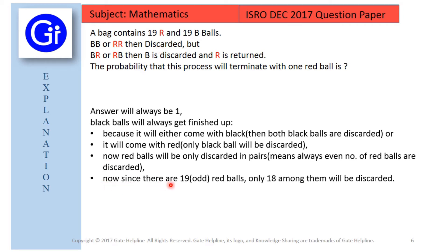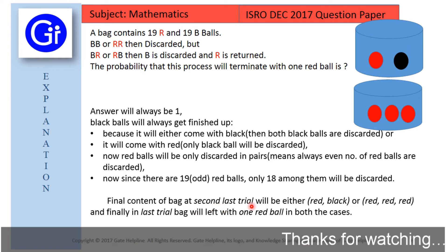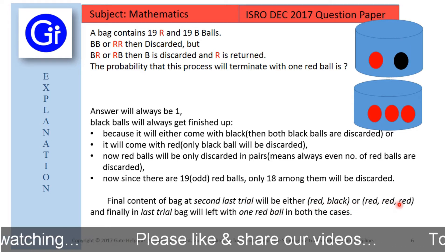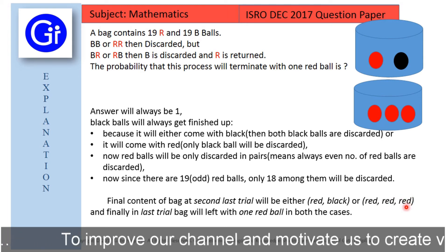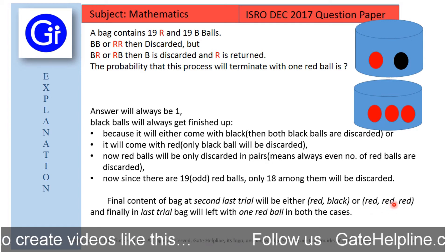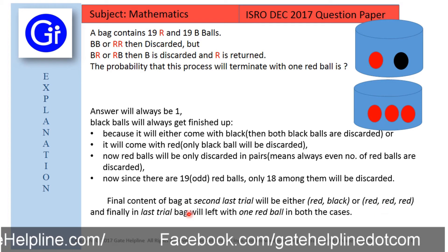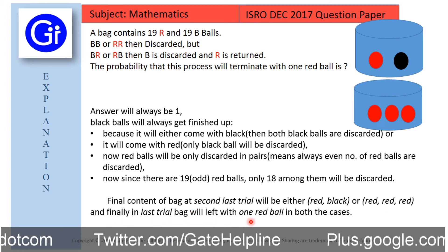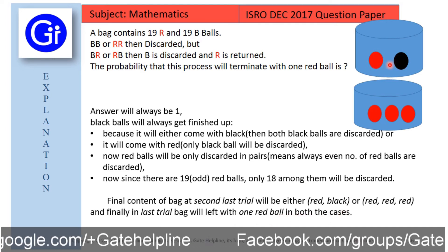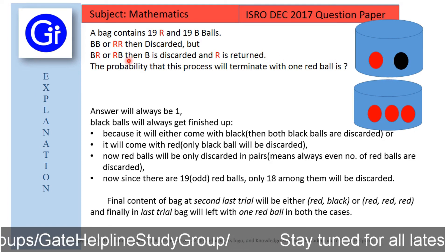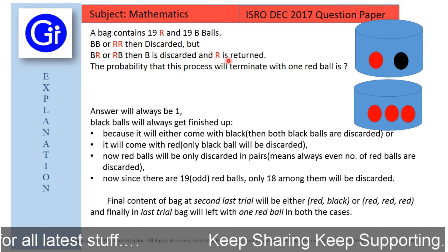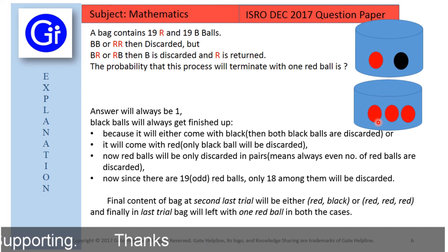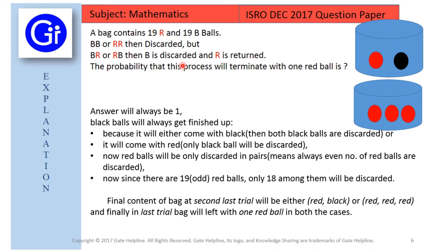Since there are 19 red balls, only 18 will be discarded. The final content of the bag at the second-last trial will be either red-black, or red-red-red — where this one red came from a previous red-black comparison, and the two red balls are left for the last trial. In the last trial, the bag will be left with one red ball in both cases: in the first case, the red-black combination applies, the black is discarded and red is returned; in the second case, the two red balls are drawn together, both are discarded, and we are left with the remaining red ball.